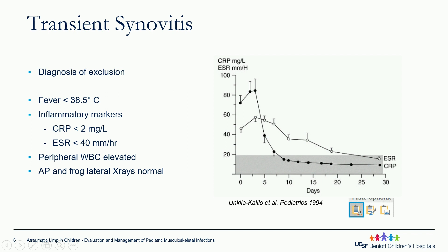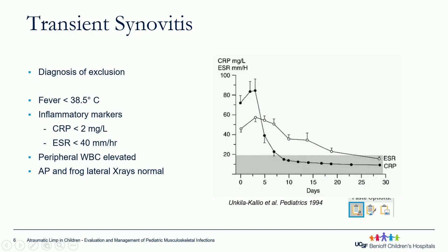This graph on the right is from one of the earlier studies looking at the difference between CRP and ESR — both are non-specific inflammatory markers, although CRP has been shown to have an earlier peak and also trends downward faster as inflammation resolves. CRP has also been shown to be more specific to septic arthritis and can be an independent risk factor. Peripheral white counts usually elevate as well.